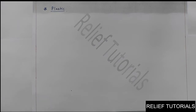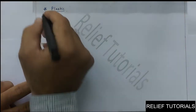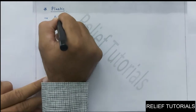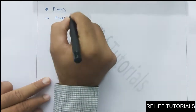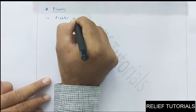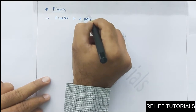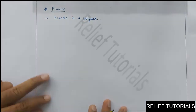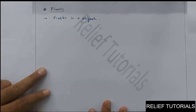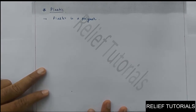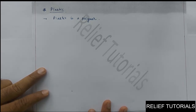Plastic is a polymer of many monomers combined together end to end in a large number — they form a long chain.